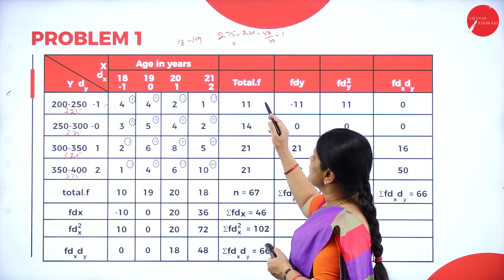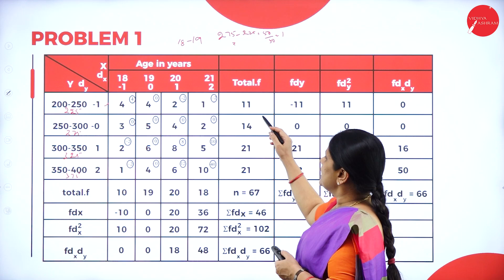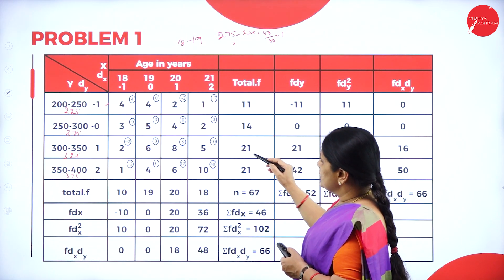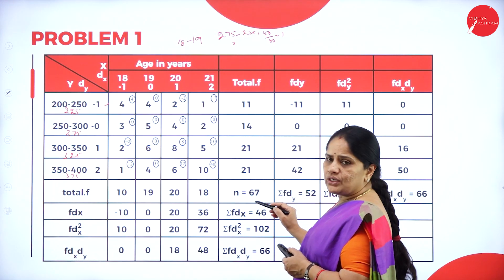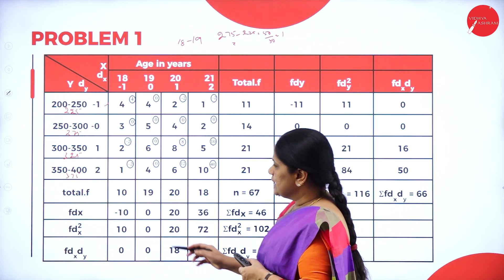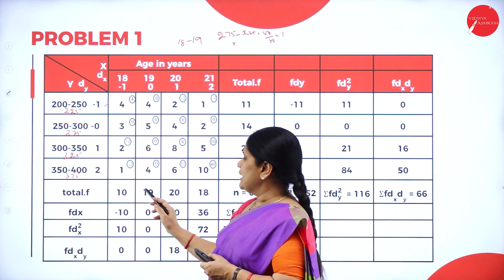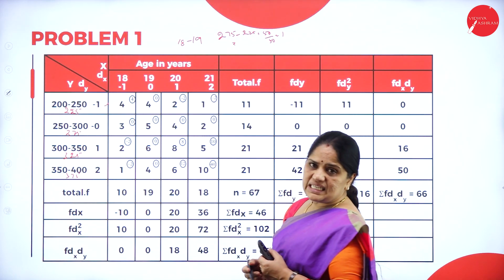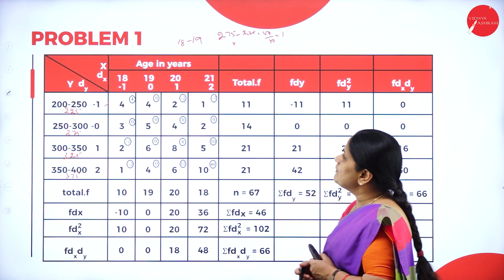The total frequency is also the same. Row-wise: 11, 14, 21, 21 — total 67. Column-wise: 10, 19, 20, 18 — total also 67.